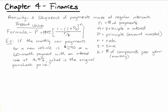So looking at our example, if the monthly car payment for a new vehicle is $290 on a 60 month payment with an interest rate of 4.9%, what is the original purchase price?